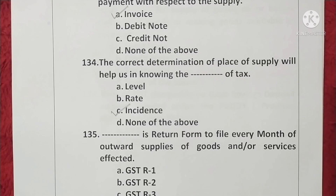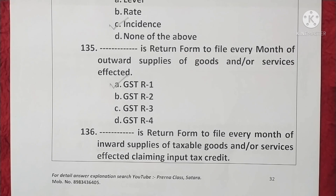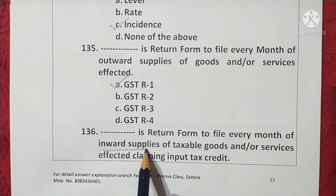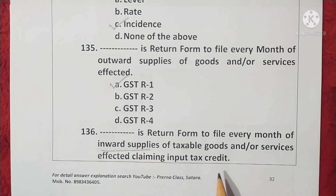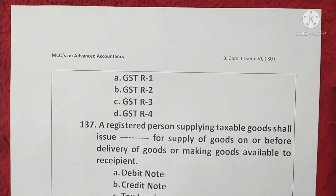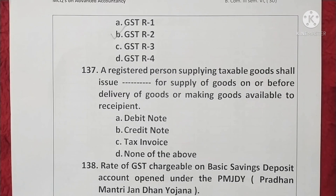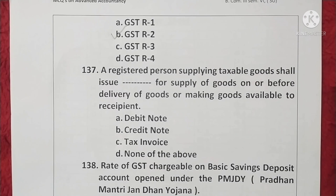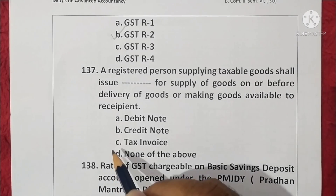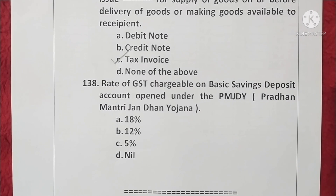Question 135. GSTR-1 is the return form filed every month for outward supplies of goods and/or services. Option A is correct. Question 136. GSTR-2 is the return form filed every month for inward supplies of taxable goods and/or services, claiming input tax credit. Option B is correct. Question 137. A registered person supplying taxable goods shall issue a tax invoice on or before delivery of goods. Option C is correct. Question 138. The rate of GST chargeable on basic saving deposit accounts opened under Pradhan Mantri Jan Dhan Yojana is nil. Option D is correct.